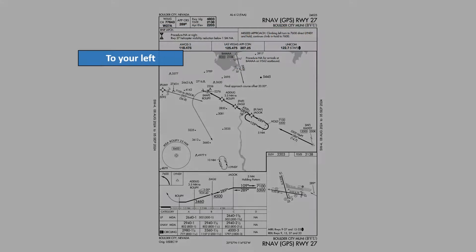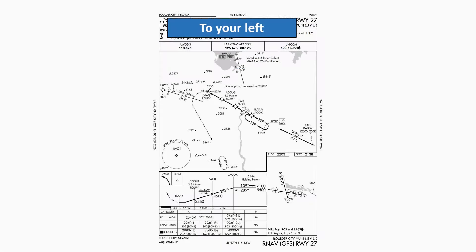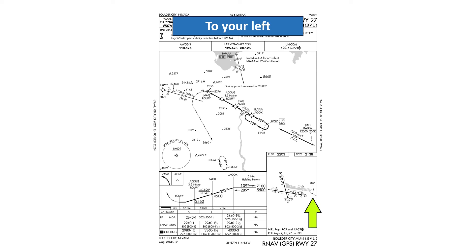Although this is a straight-in approach, the runway will be off to your left, assuming you're not crabbing heavily into the wind. You can notice how the approach course is offset from the arrow on the airport diagram, or the note that the final approach course is offset 20 degrees.